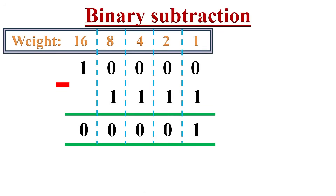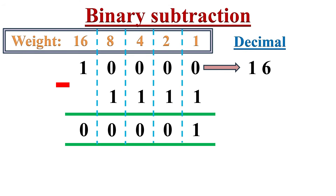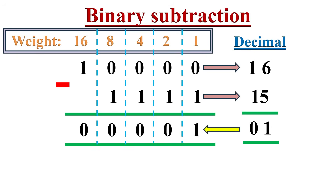Let's convert them to decimal numbers to check the answer. The decimal equivalent of the first binary number is 16 plus 0s, which is 16. The second binary number is 8 plus 4 plus 2 plus 1, which is 15. So 16 minus 15 equals 1, which is nothing but 1 in the binary number system. Our subtraction is perfect.